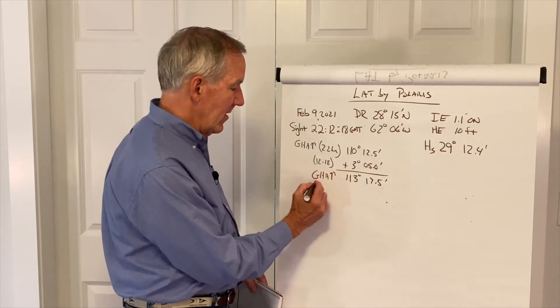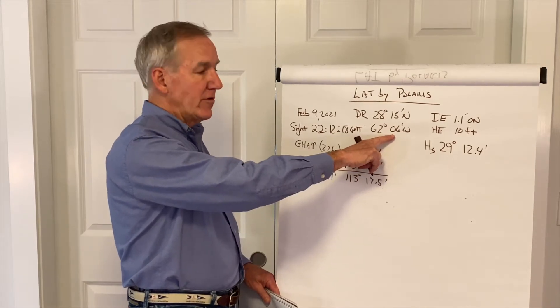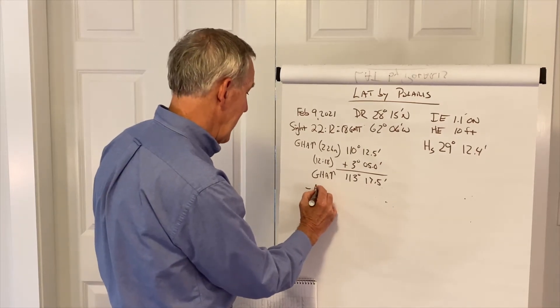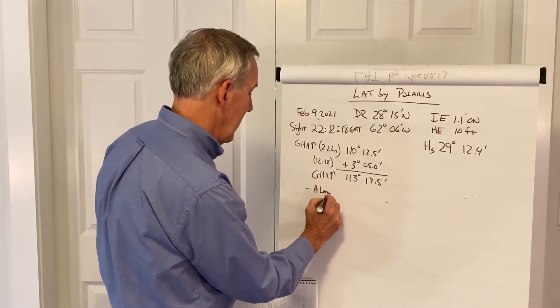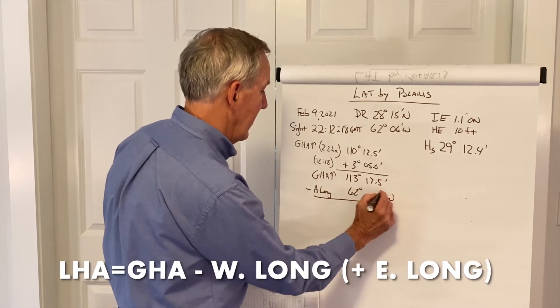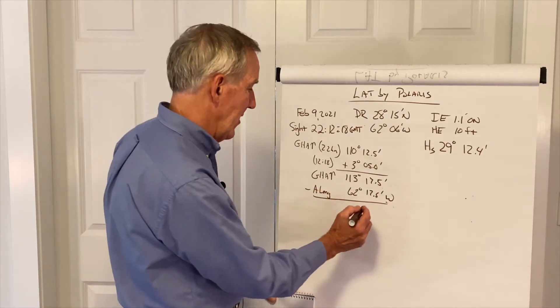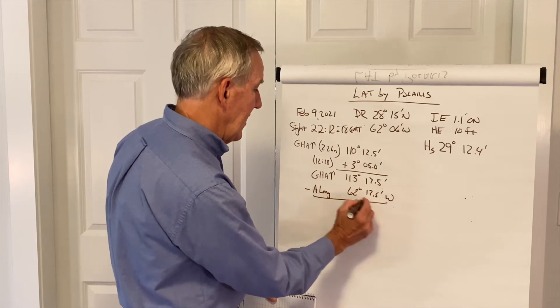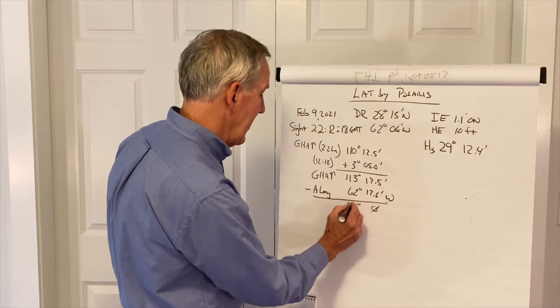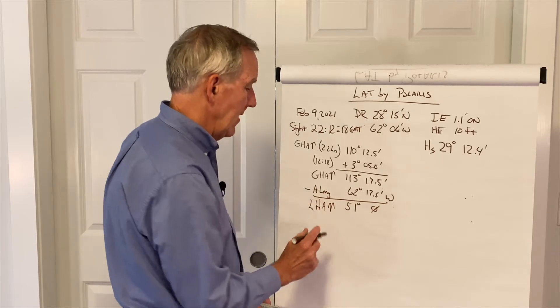Now, just like we've been doing all along, we're going to apply our longitude. We're going to take our DR longitude of 62 degrees, 6 minutes west. And since it's west longitude, we have to subtract that. We'll plug in the degrees and make the minutes the same, although we're not going to be plotting an assumed position, but we'll follow the same procedure. So the LHA of Aries is 51 degrees.